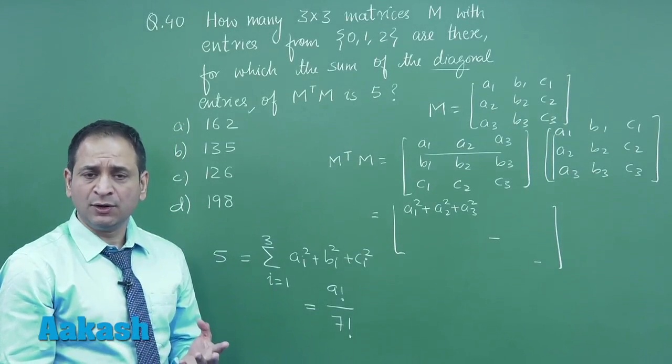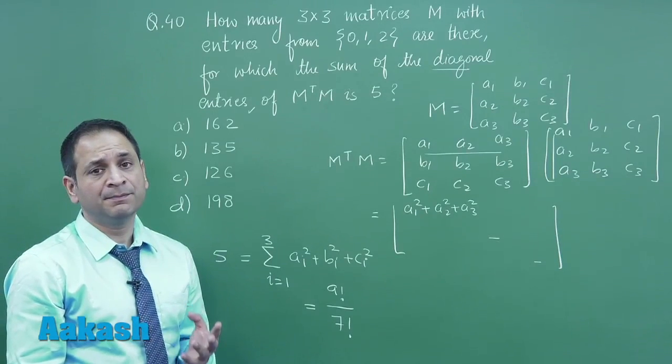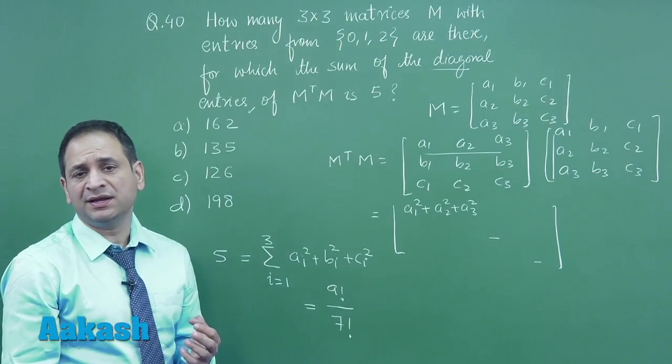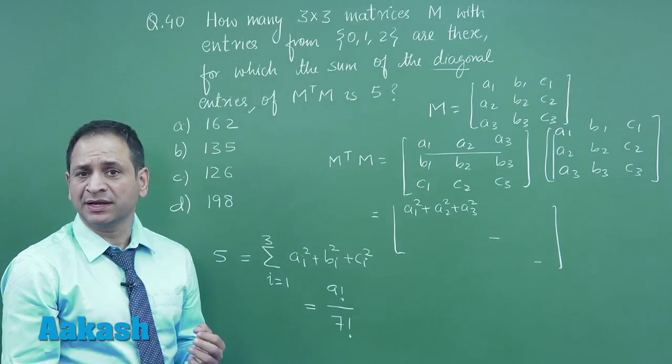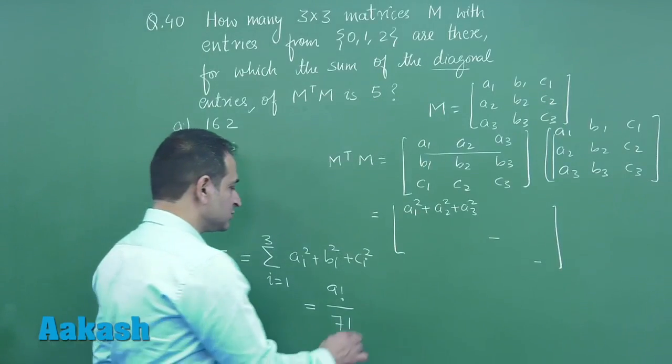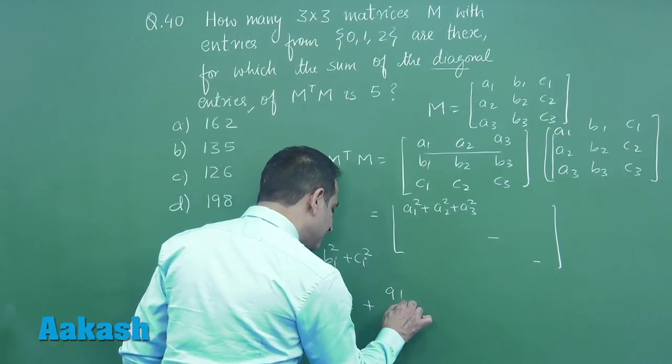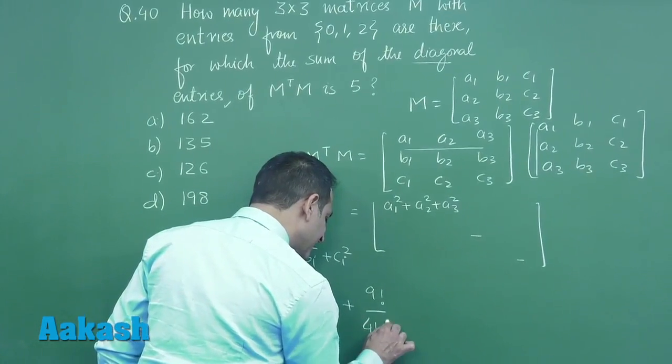There is one more possibility. Another possibility is that if we take 5 values as 1 and 4 values as zero, then also you can think the sum will be 5. So this is the another permutation for the next case.